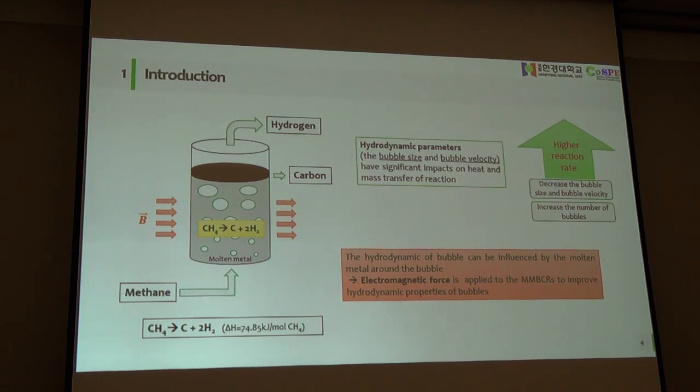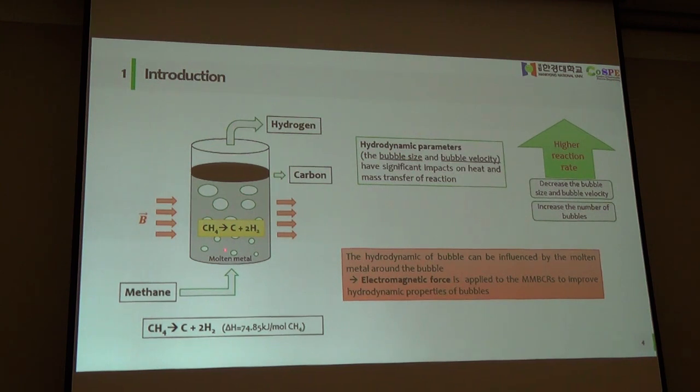So we can decrease the bubble size, bubble velocity, and increase the number of bubbles to increase the reaction rate to produce hydrogen. In the literature surveys, some researchers believe that the electromagnetic force affects the hydrodynamic bubble through the molten metal. And so this is the reason why in my research I use EMF to activate the effect of magnetic force in the bubble column hydrodynamics with the purpose to increase the reaction rate to produce hydrogen from methane.